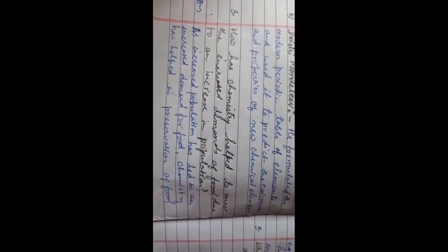Three number: How has chemistry helped to meet the increased demand of food due to an increased population? You will write: As increased population led to an increased demand for food, chemistry has helped in preservation of food in order to prevent wastage and make it available to its customers.